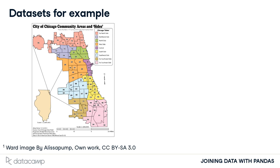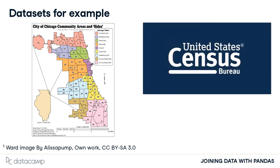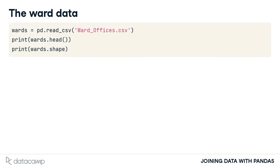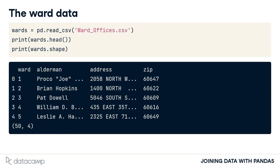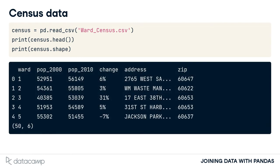In this example, we want to merge the local government data with census data about the population of each ward. If we look at the wards table, we have different information about the local government of each ward, such as the government's office address. This table has 50 rows and four columns, or one row for each ward. The census table contains the population of each ward in 2000 and 2010, and that changed as a percentage. Additionally, it includes the address for the center of each ward.